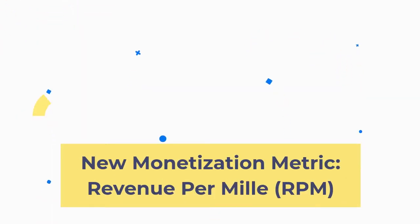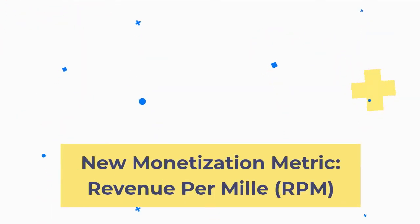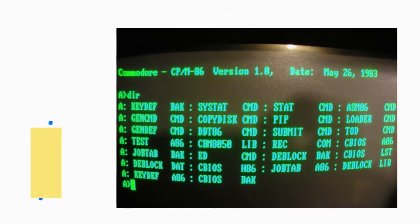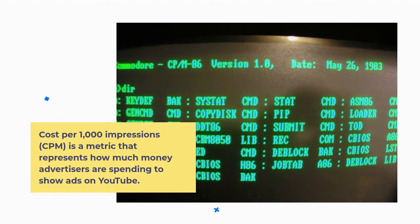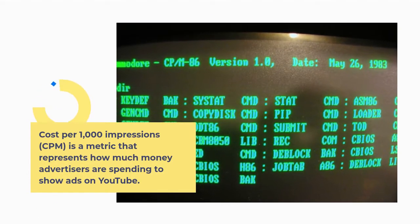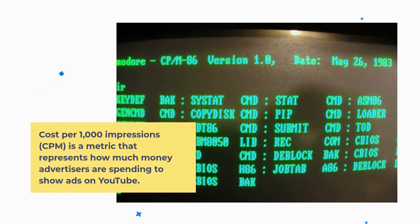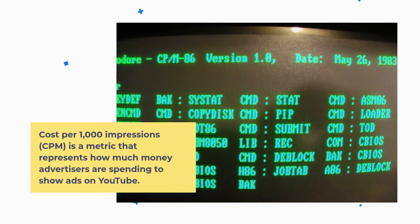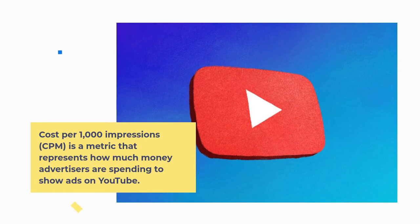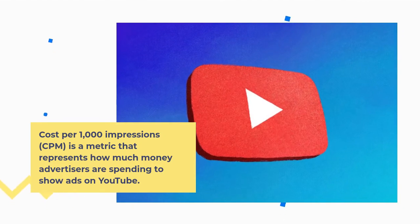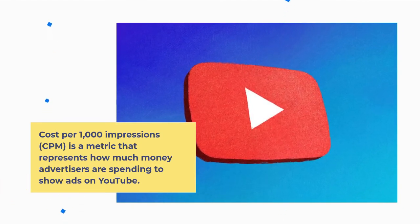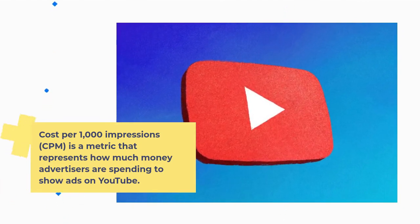New monetization metric: Revenue per mil, RPM. Cost per 1,000 impressions, CPM, is a metric that represents how much money advertisers are spending to show ads on YouTube.